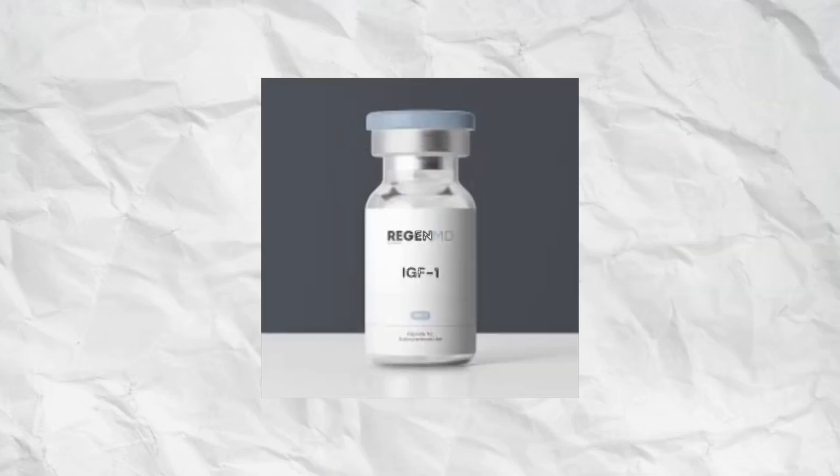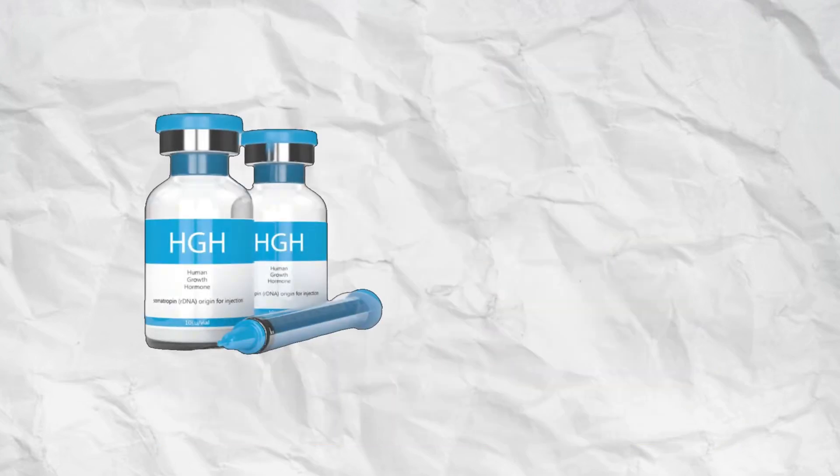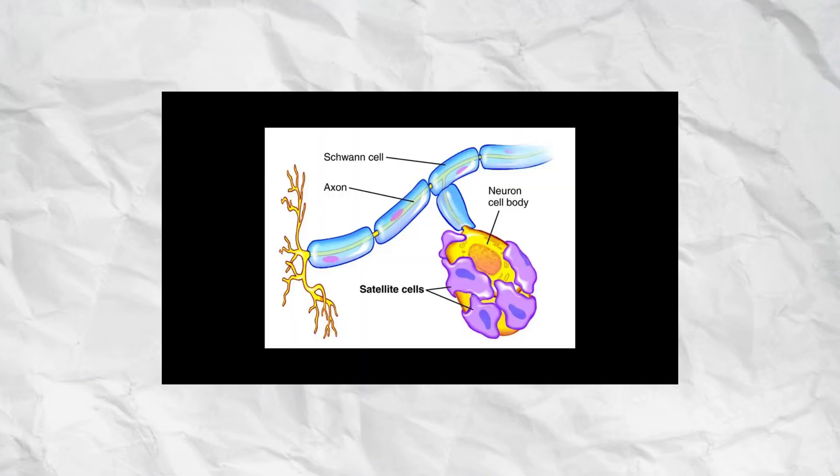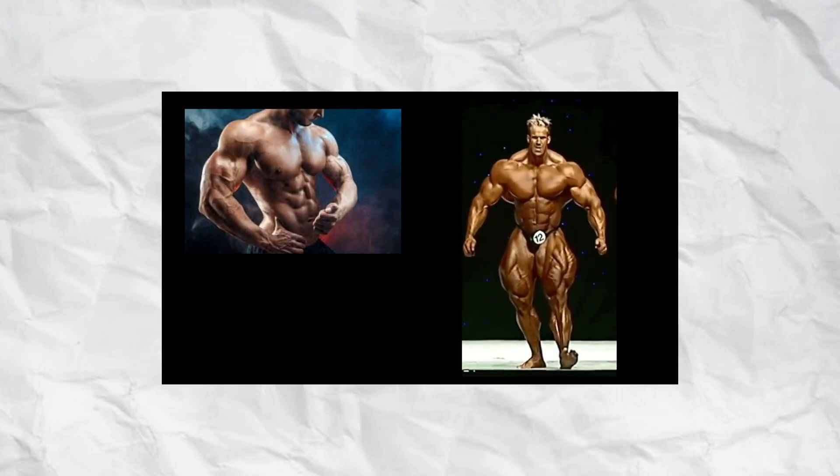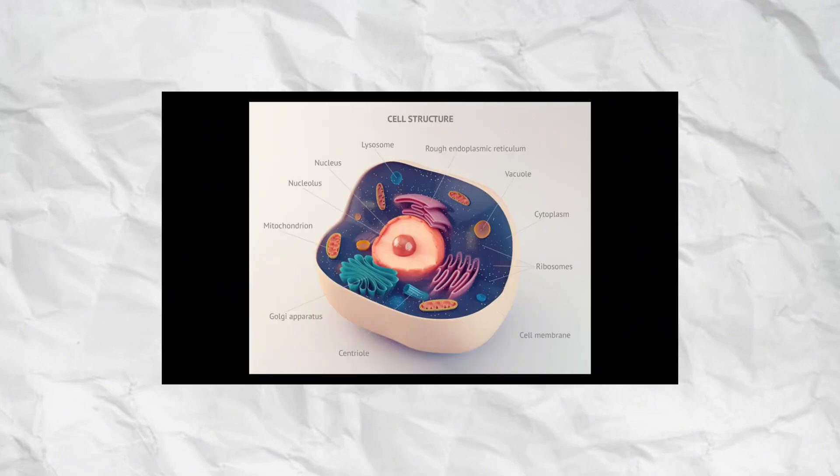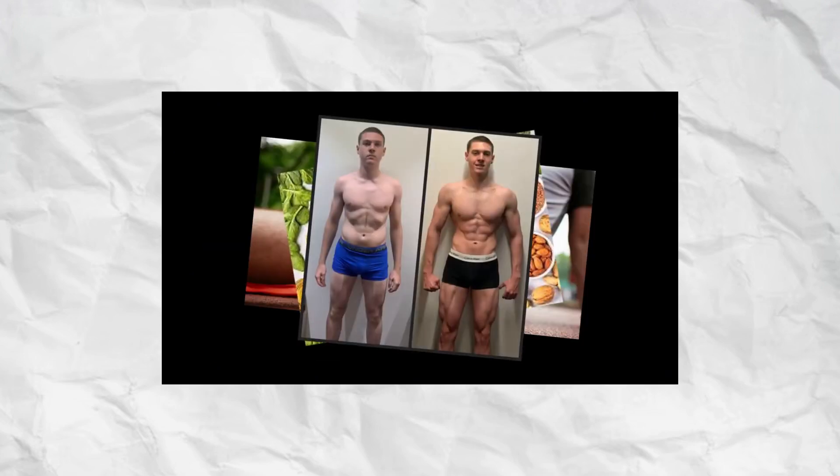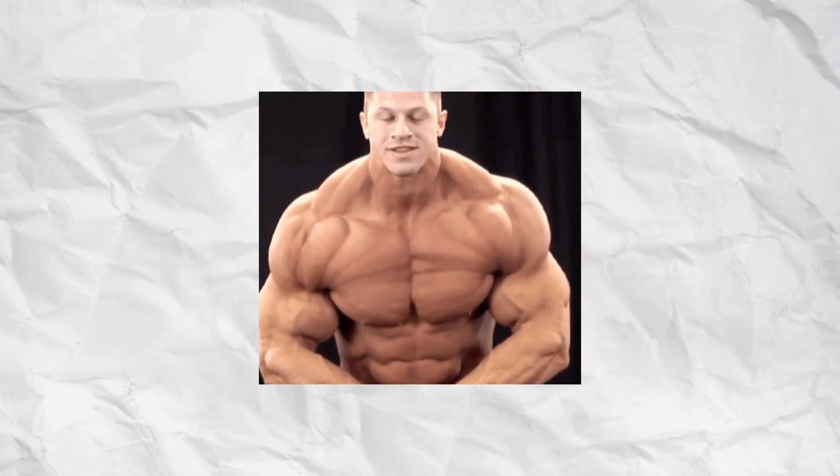IGF-1-LR3, long ARG-3 insulin-like growth factor 1, is a modified version of natural IGF-1, engineered to last longer and act more powerfully in the body. It works by binding to IGF-1 receptors on muscle and bone cells, activating the PI3K-AKT-mTOR pathway, the main driver of muscle protein synthesis and cell growth. Its extended half-life of around 20-30 hours allows for sustained anabolic effects compared to natural IGF-1, which lasts only minutes.